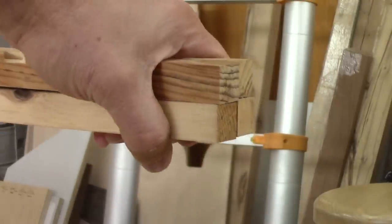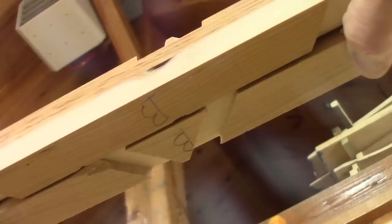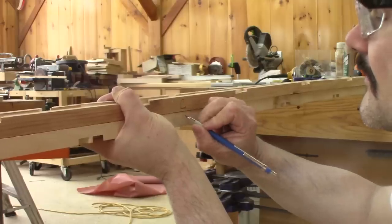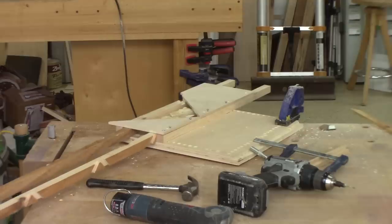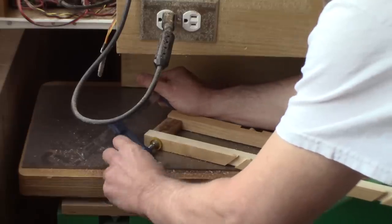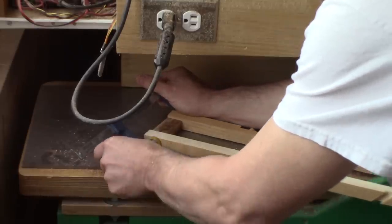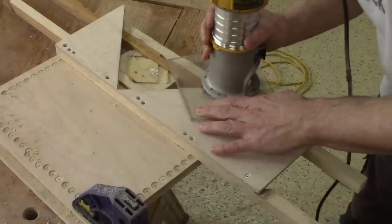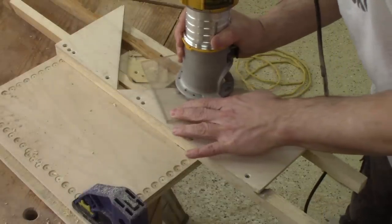Then I put the four pieces together and identify the remaining two sides. Next, I can route the rest of the grooves. And just like for the first two, I make sure both strips will stay at the same place while I'm cutting their grooves.